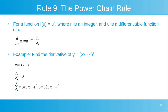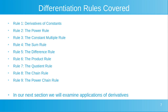Those were two examples of differentiation using the chain rule. We've now covered a number of differentiation rules in this series: the constant rule, the power rule, constant multiple rule, sum rule, difference rule, product and quotient rule, and the chain and power chain rule. In our next section, we're going to examine applications of derivatives — using these rules to solve problems. Thank you for your time and see you in the next video.